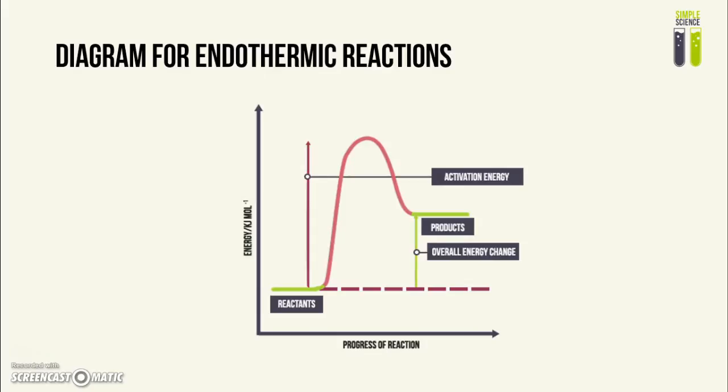And next, you guessed it, it's the diagram for endothermic reactions. The reactants would have less energy than the products. Once again, you need to take note to label the activation energy and the overall energy change. Again, remember to label the axes and you should be just fine.